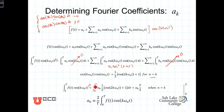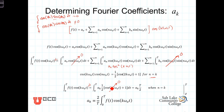We're left with only the one term when n equals k. When we integrate both sides of this equation over the period T, the cosine of 2k omega-naught t term integrates over an integer number of periods and goes to zero. We still have the constant one-half, and the integral of one dt is T, evaluated at the upper and lower limits, giving us a_k times T over two on the right-hand side.